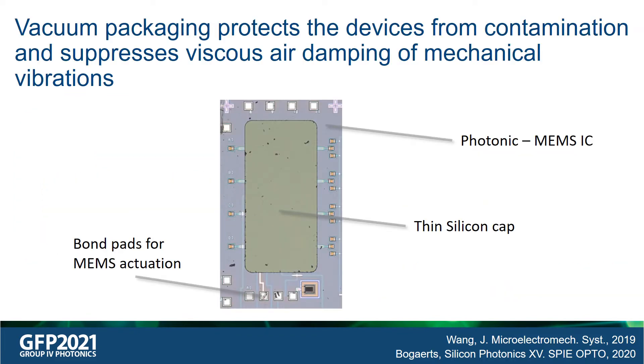A microscope image of the final vacuum packaged device is shown here. We can see the photonics MEMS IC as well as the thin silicon sealing caps. The vacuum packaging is done to protect the device from atmospheric contamination and humidity, and also to suppress viscous air damping of the mechanical resonator.